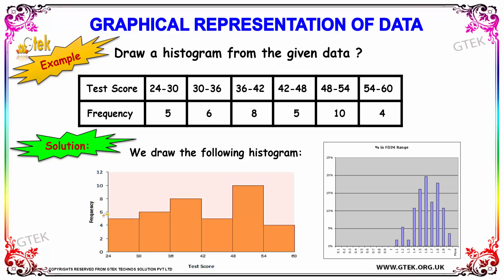From 24 to 30, the frequency is 5, so we have indicated level 5. From 30 to 36 it's 6, indicated till 6. From 36 to 42 it's 8, indicated till 8. From 42 to 48 it's 5, indicated at 5.